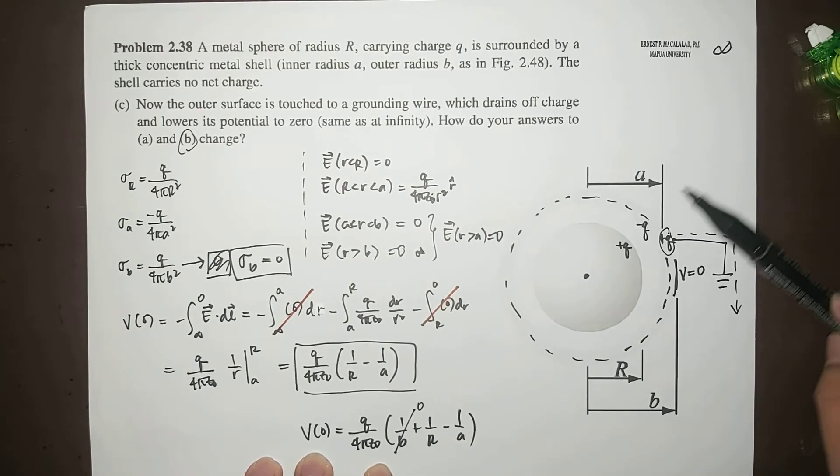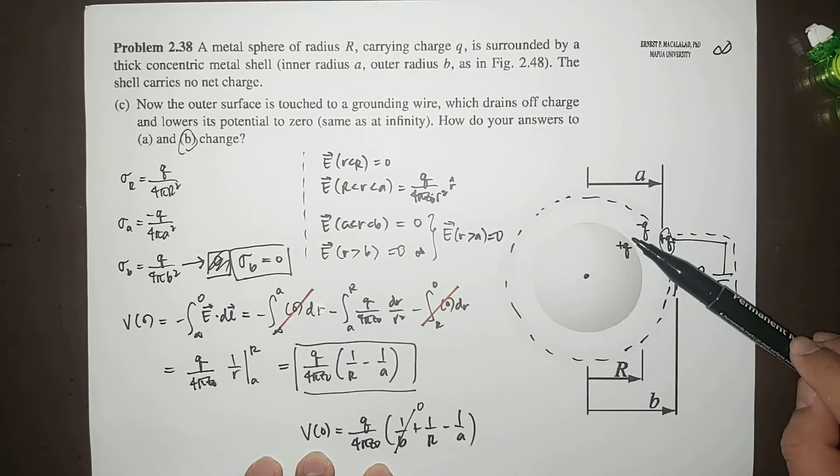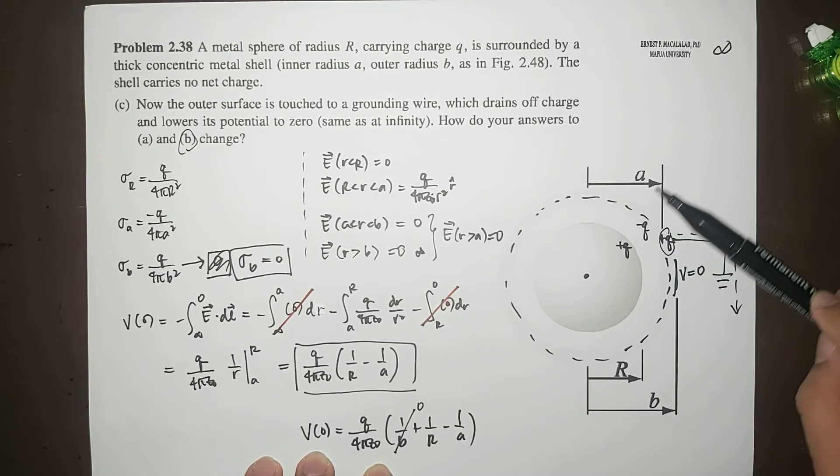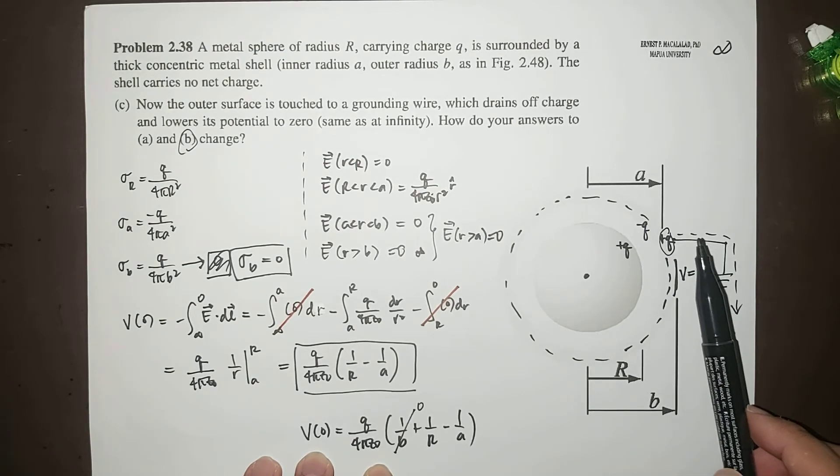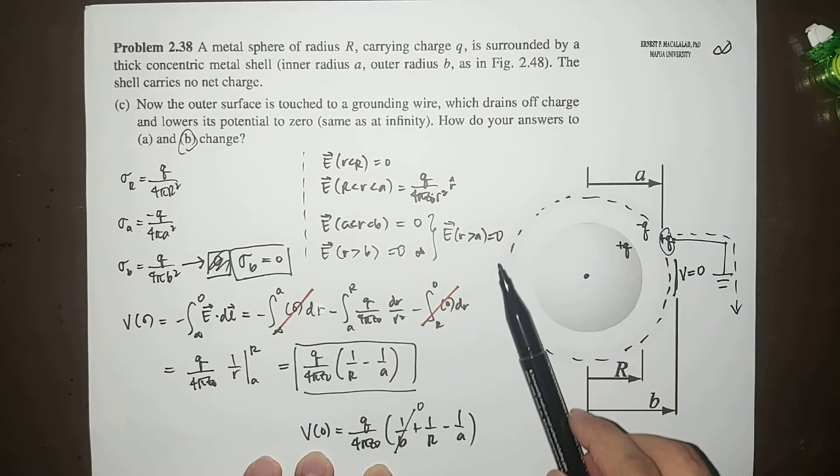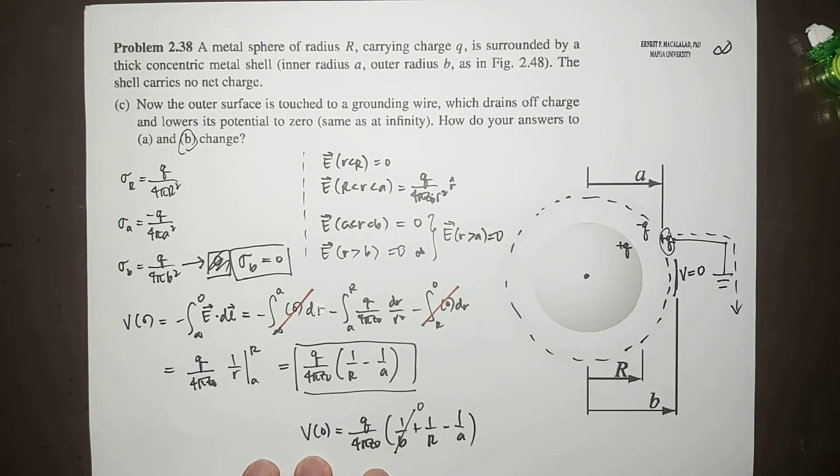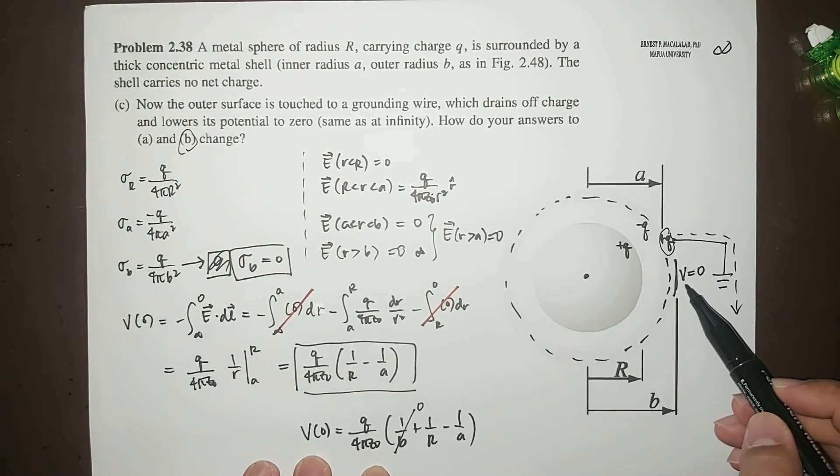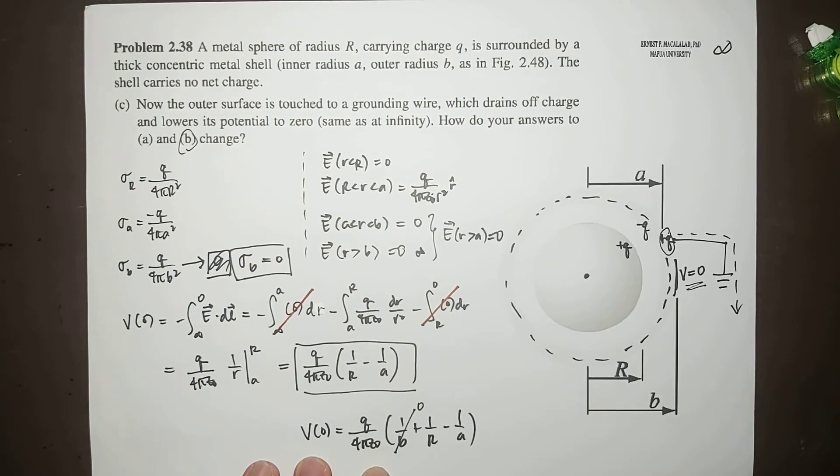will now be the same as the contribution of this region. So effectively, essentially, the outer shell will not contribute any additional potential at all because of the grounding. As you will notice here, the potential is zero.